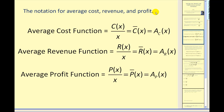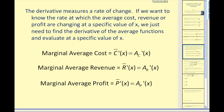The notation for average cost, revenue, and profit can be as follows. Sometimes they'll use c-bar of x or a-sub-c of x for average cost, r-bar of x or a-sub-r of x for average revenue, and p-bar of x or a-sub-p of x for average profit. Remember, the derivative measures a rate of change. So if we want to know the rate at which the average cost, revenue, or profit are changing at a specific value of x, we just need to find the derivative of the average functions and evaluate at that specific value.